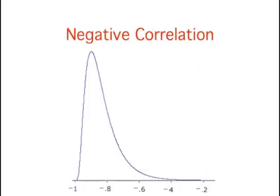When rho is negative, the distribution has a positive skew. This graph shows the distribution for rho equals negative 0.9.